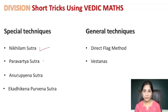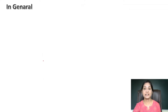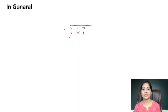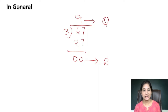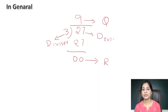Before going to a particular problem, we will discuss the general terms used in division. Let me take any example: 27 divided by 3. How will you divide this using the usual method? 3 nines are 27, so our remainder is 0. We call this the remainder, this is our quotient, this is the divisor, and this is the dividend.